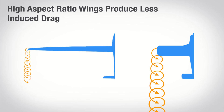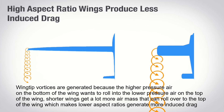Long aspect ratio wings, like the glider on the left, have way longer wings than the one on the right. That also means they generate fewer wingtip vortices, because more of their area is far away from the tip. Shorter wings have so much area close to the wingtip, so they generate a lot more induced drag, which slows the plane down and lowers the lift-to-drag ratio significantly.